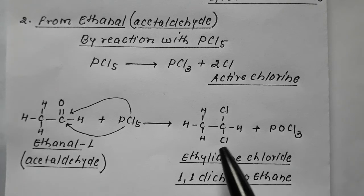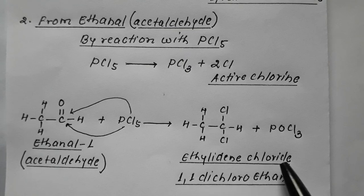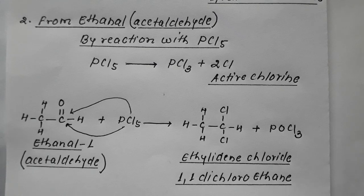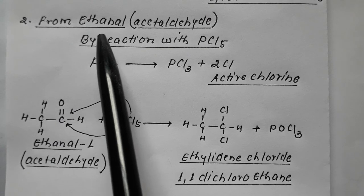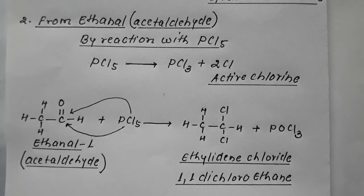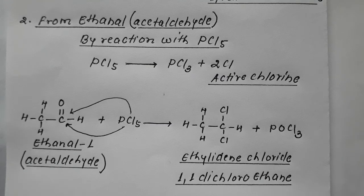The result is CH₃·CCl₂H plus POCl₃ (phosphoryl chloride). This is ethylidene chloride — 1,1-dichloroethane. So the two methods to prepare ethylidene chloride are: reaction of acetylene with excess HCl, and reaction of acetaldehyde with PCl₅.